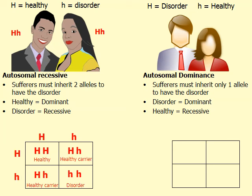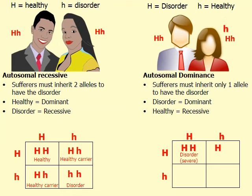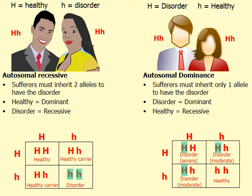For the autosomal dominant side: if a man is heterozygous for Huntington's disease, he has the moderate form and is clearly an adult old enough to marry. If the mom is also heterozygous, she too has the moderate version of Huntington's disease. Filling in the Punnett square, we can see they could actually have a child with the most severe form of Huntington's disease, two children with the moderate version, and only a one-out-of-four chance of having a healthy child. So if the disorder is dominant, you only inherit one allele, but if it's recessive, you have to inherit two.